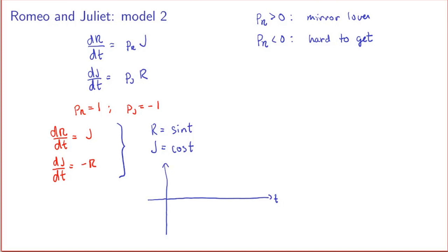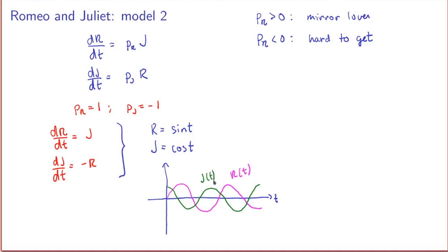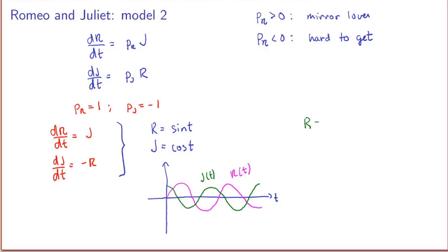So that's one example of a solution showing how Romeo and Juliet's love evolves. The most general solution is a linear combination of sines and cosines. For this system of two differential equations, Romeo's love is any linear combination a·sin(t) + b·cos(t), and Juliet's love would then be a·cos(t) - b·sin(t). It's easy to check that for arbitrary constants a and b, these two functions solve the system.